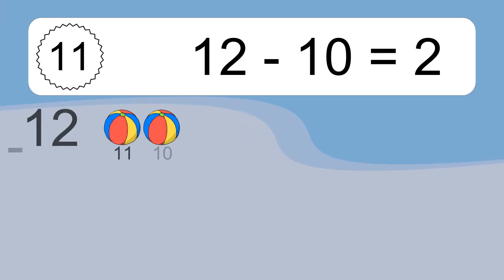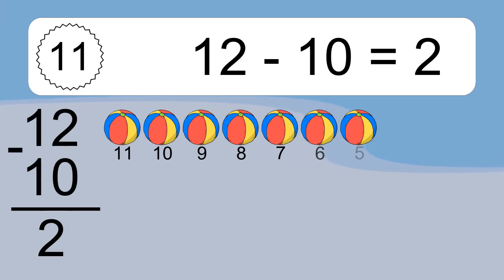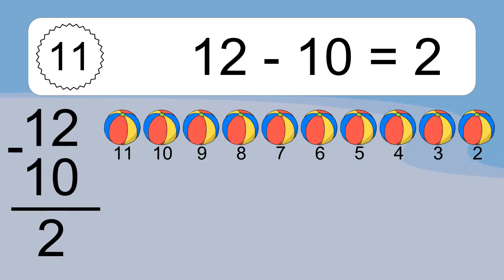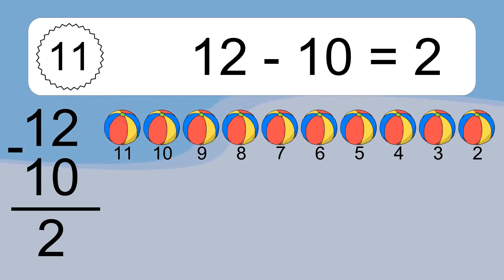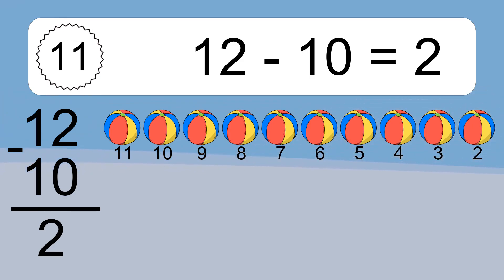12 minus 10 equals 2. Let's count it: 11, 10, 9, 8, 7, 6, 5, 4, 3, 2.